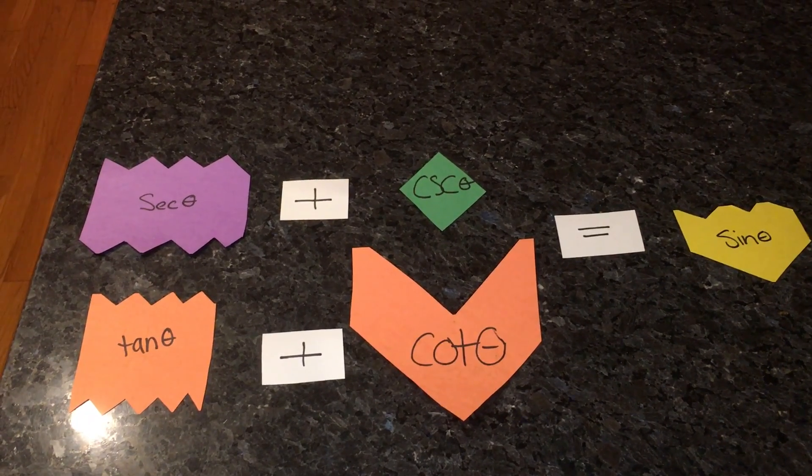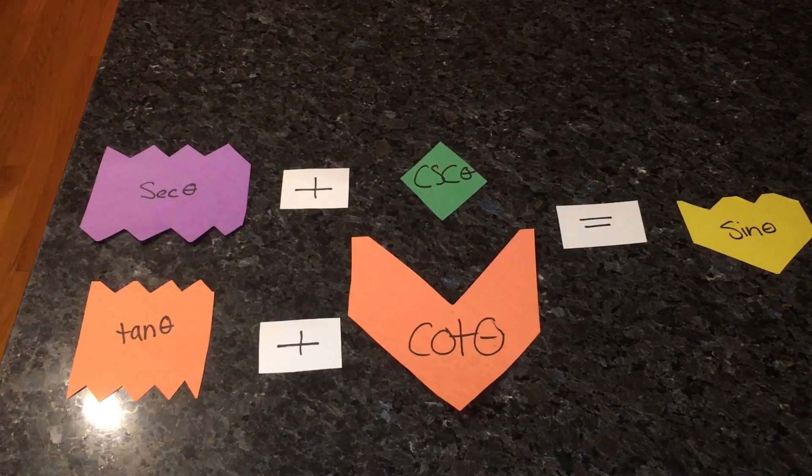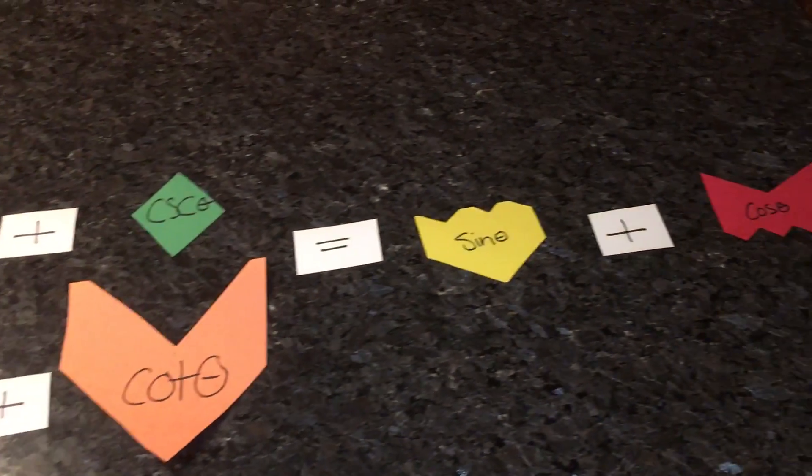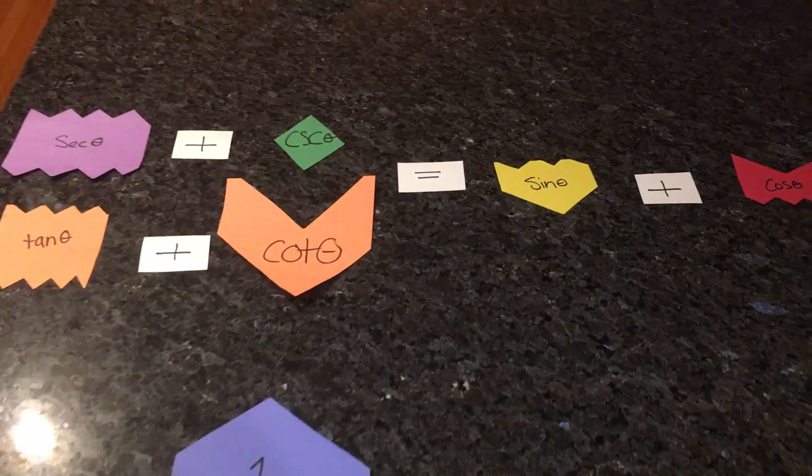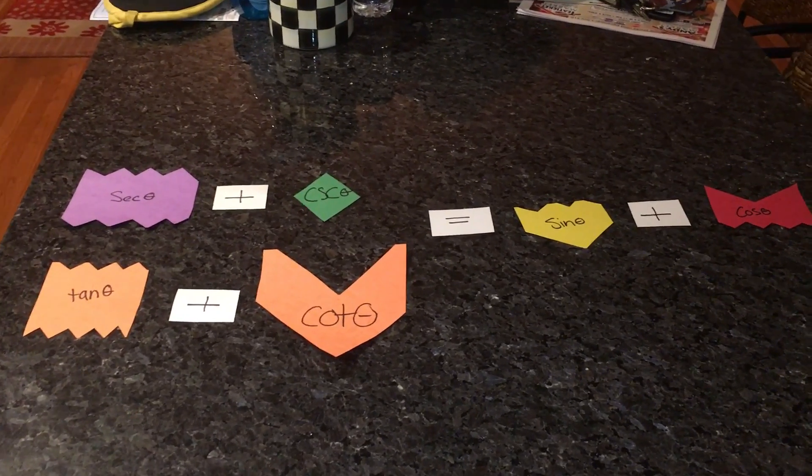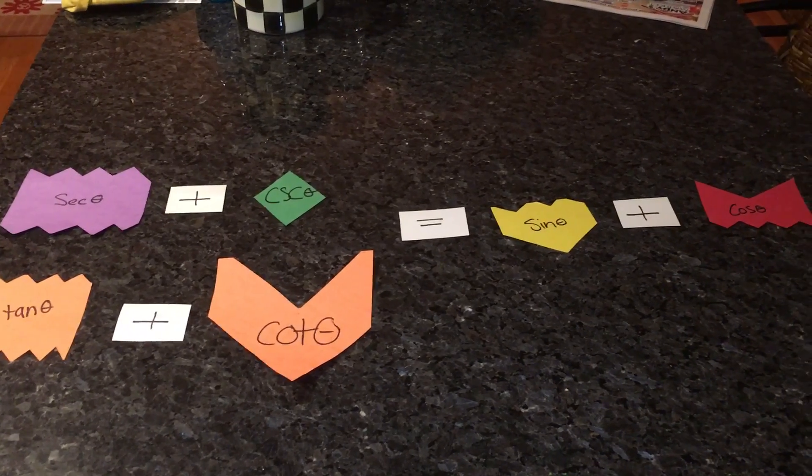So here we have the verification problem: secant plus cosecant over tangent plus cotangent equals sine plus cosine. In order to verify this problem, we have to figure out which is the hardest side and use our trig identities to set it equal to the other side.